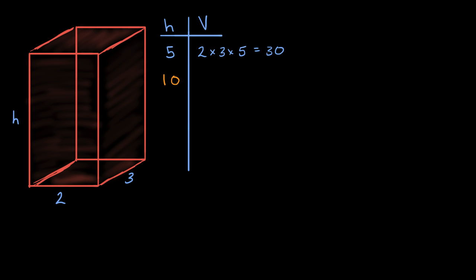Well, in this situation, we're still gonna have two times three times our new height times 10. So now it's going to be six times 10, which is equal to 60. Notice, when we doubled the height, if we just double one dimension, we are going to double the volume.